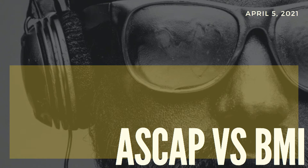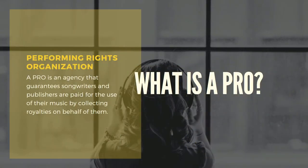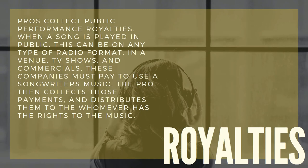Without further ado, today we are talking about ASCAP versus BMI. The first question that needs to be answered is: what is a PRO? A PRO is a performing rights organization — an agency that guarantees songwriters and publishers are paid for the use of their music by collecting royalties on behalf of them. When we're talking about royalties, we're talking about public performance royalties, which is when a song is played in public.